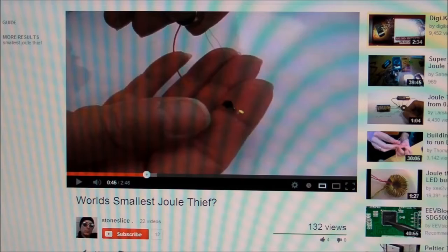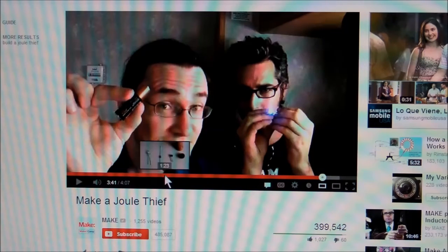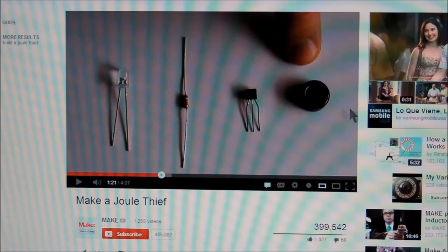But I wanted to make a really tiny jewel thief that was true to the original design that I first saw in this video many years ago, and in which they used a ferrite core, a transistor, a resistor on the transistor's base, and a white or a blue LED. And then powered by a 1.5 volt cell.